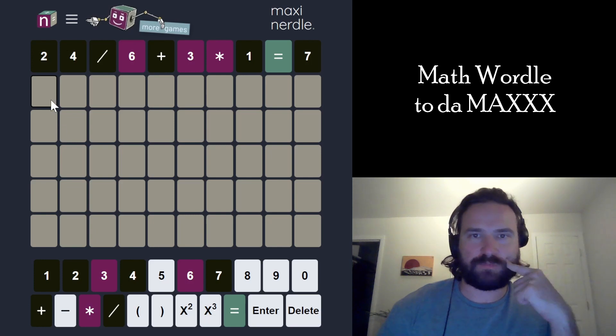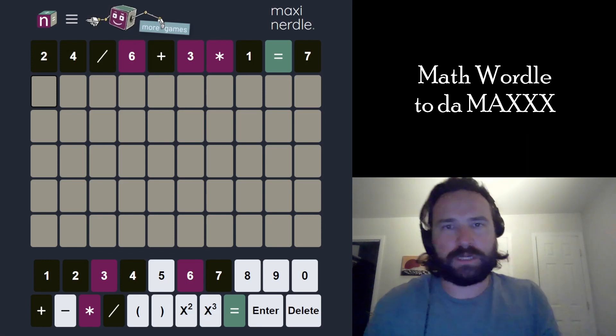I mean, 3 times 6 is pretty small. I could even probably do like 3 times 6 times 5. That would be 90. No, that's not going to work. That's too big.